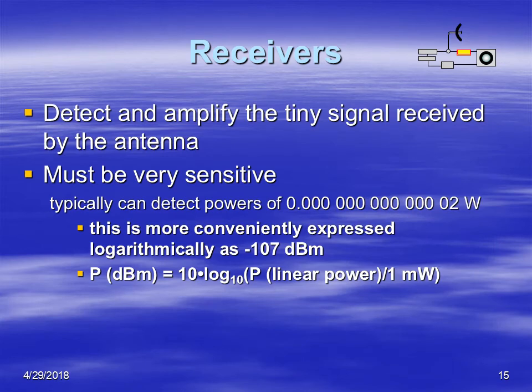A little bit about receivers now. Receivers have to be very sensitive to pick up the very weak power coming back to the radar. On average, power coming back is on the order of 10 to the minus 12 watts, which is very, very small. The power being transmitted by these radars is typically on the order of 10 kilowatts — a massive amount of power — yet only a very small amount comes back.